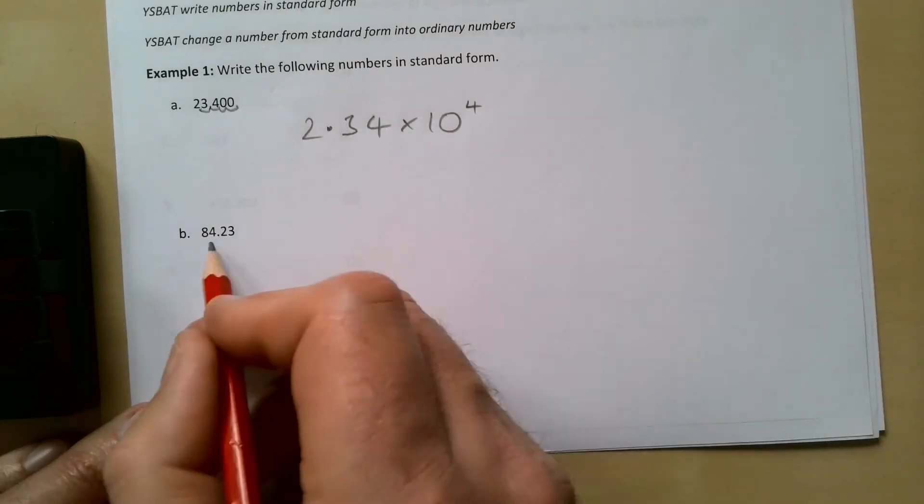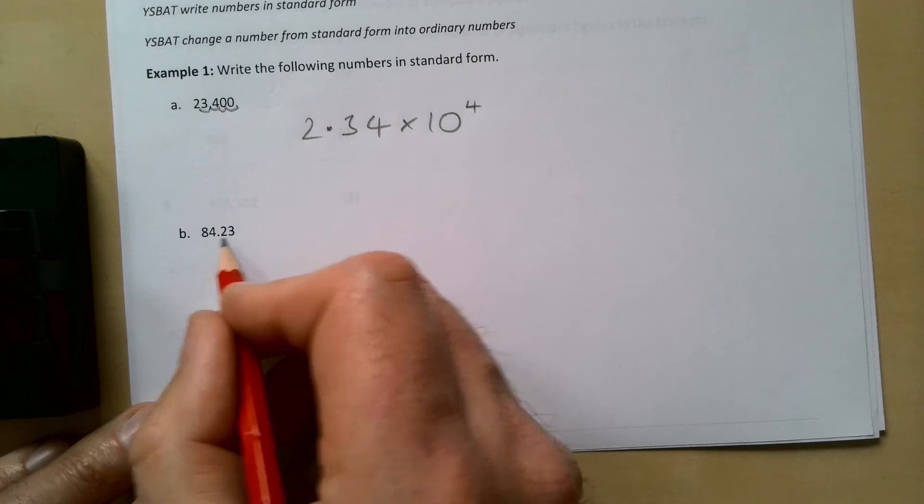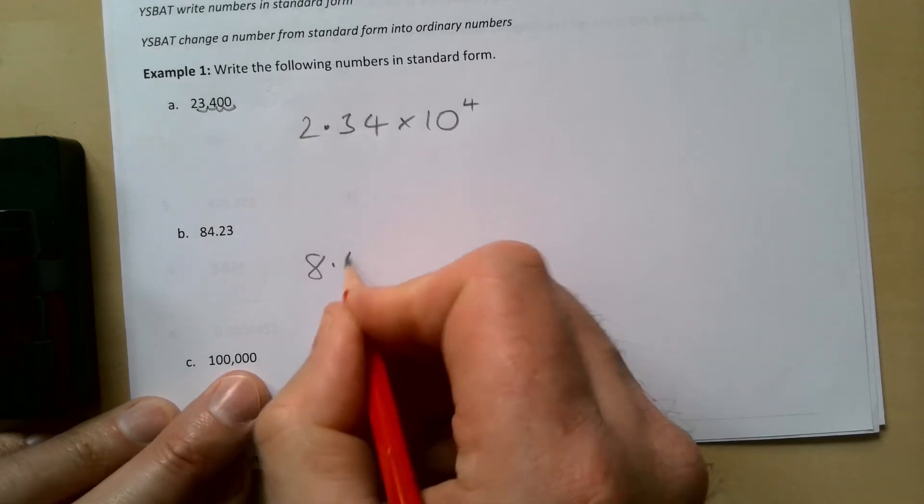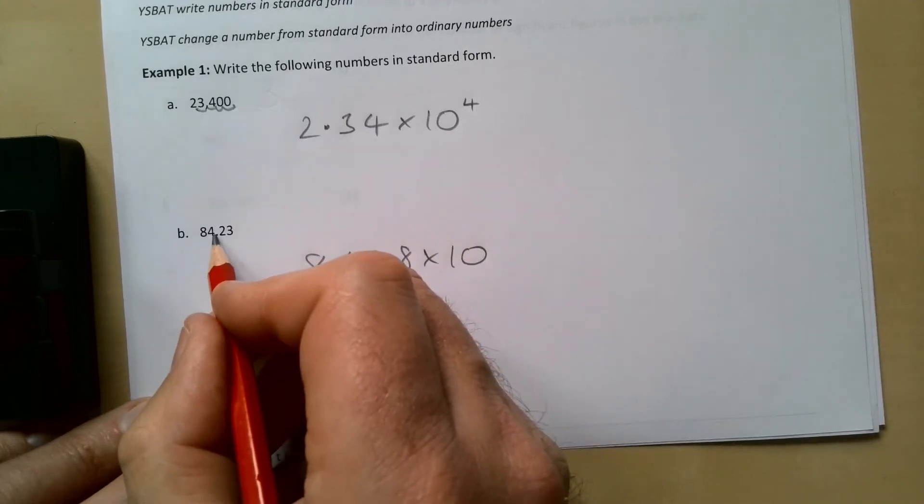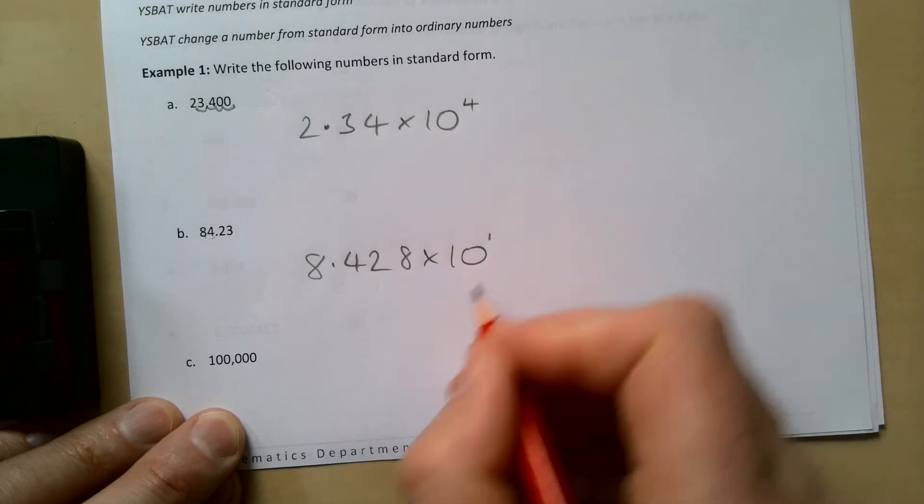For 84.23, we need to write that in standard form. We need to put the number between 1 and 10, so that's going to be 8.423 times 10. It's only moved one place, so it's times 10 to the power of 1. Some people just write that as times 10.